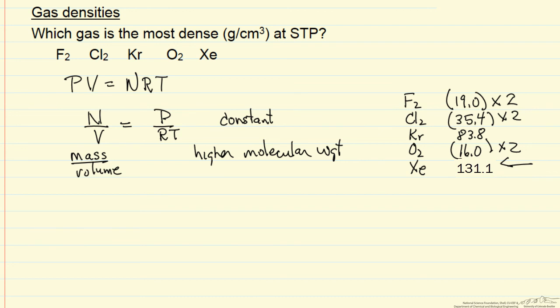For example, we could put in pressure and temperature at standard conditions and calculate how many moles per volume. Remember that's the same for each of these molecules. Then we multiply by the molecular weight to get the mass. So if we took pressure over RT, multiply by the molecular weight, this would give us the mass density. And we would conclude this has the highest mass density.